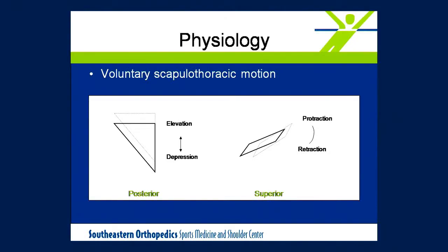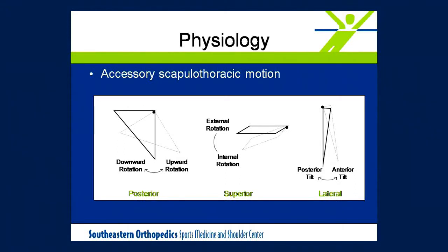At the scapula, there are both voluntary and accessory motions that occur. The voluntary motions along the thoracic wall at the scapulothoracic joint would be elevation and depression, and then also protraction and retraction around the thoracic wall. The accessory joint motion occurring at the AC and SC joints would be upward and downward rotation, anterior and posterior tilt, and internal and external rotation.